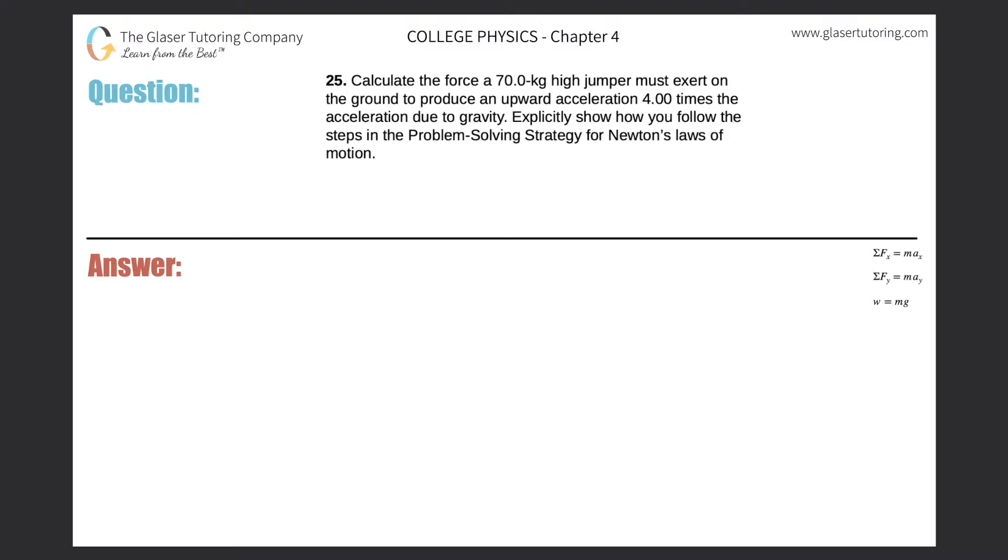25. Calculate the force a 70 kilogram high jumper must exert on the ground to produce an upward acceleration four times the acceleration due to gravity. All right, so let's detail it with a free body diagram.